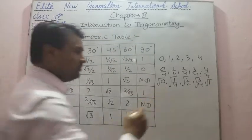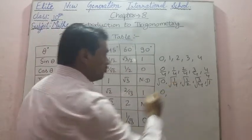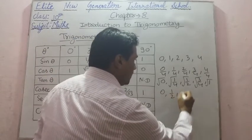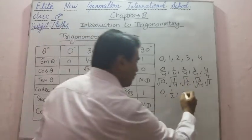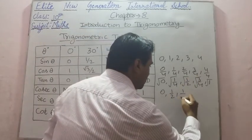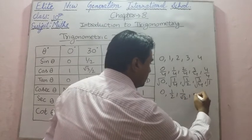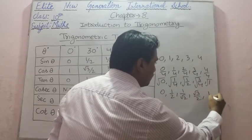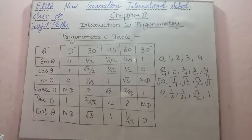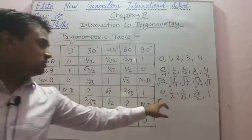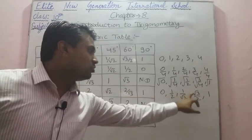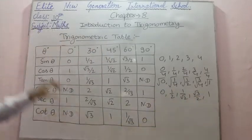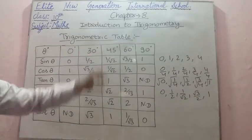Under root 0 will be 0. Under root 1 by 4 will be 1 by 2. Under root 1 by 2 will be 1 by root 2. Under root 3 by 4 will be root 3 by 2, and under root 1 will be 1. So: 0, 1 by 2, 1 by root 2, root 3 by 2, and 1 — these are the ratios of sin theta for all these angles.